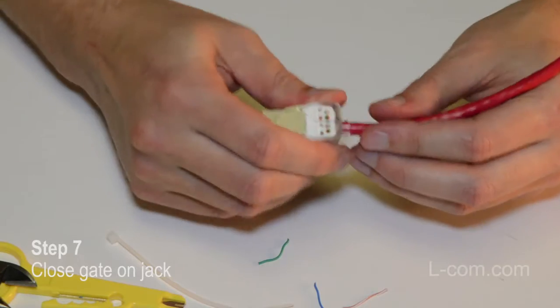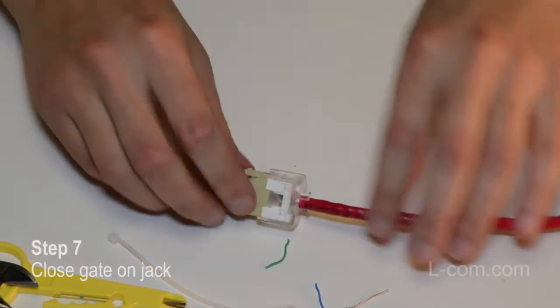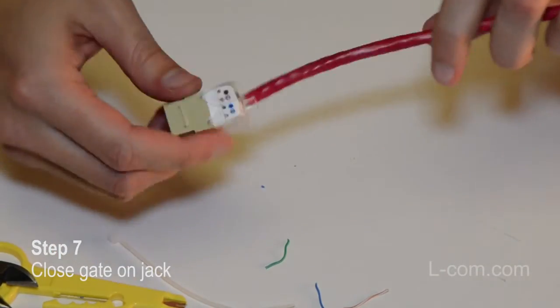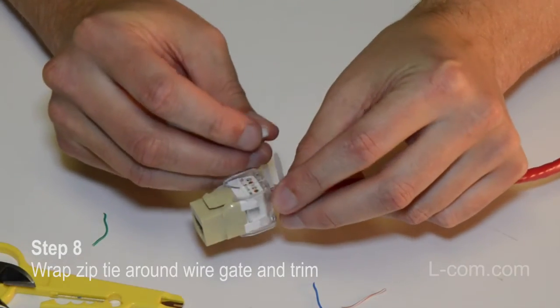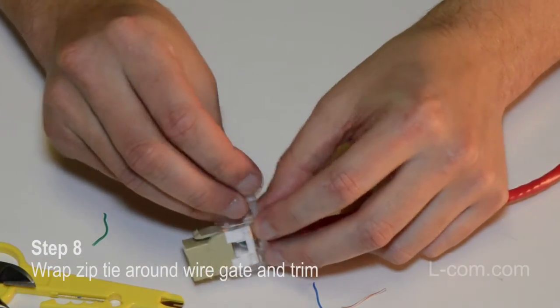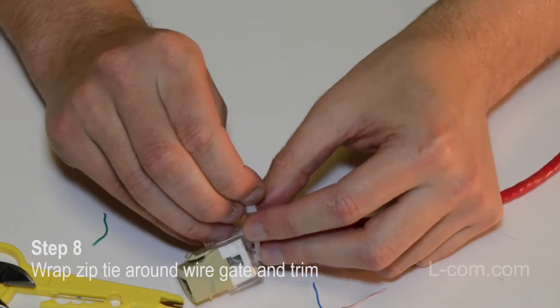Now close the gate on the jack around the guide and the cable. If necessary, you can wrap a zip tie around the circular section of the gate. Now just snip the excess tie and you're done.